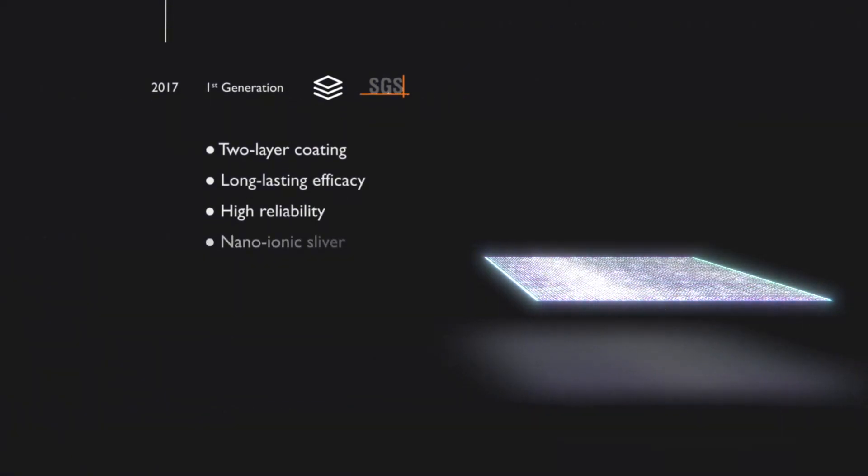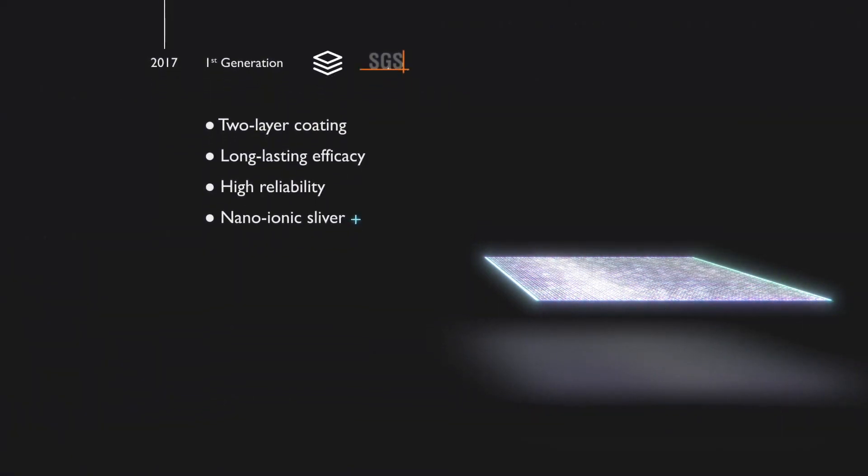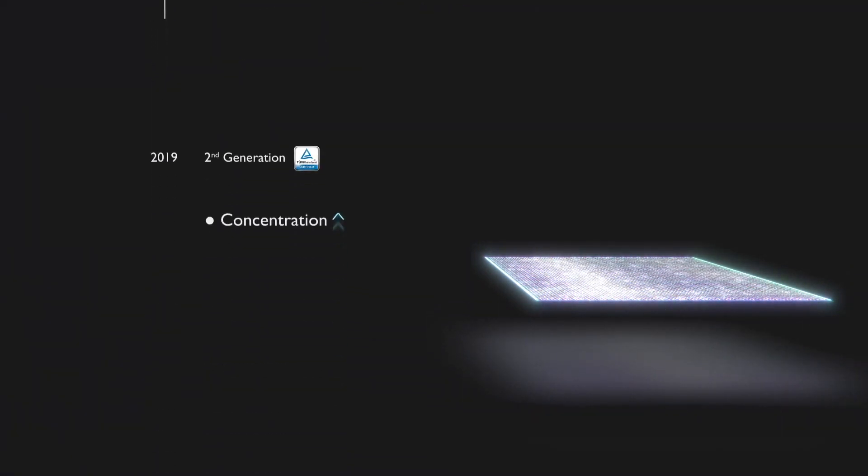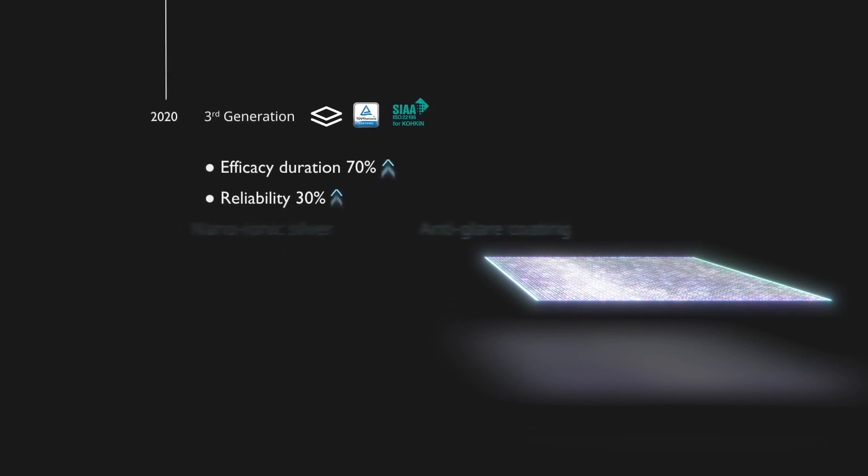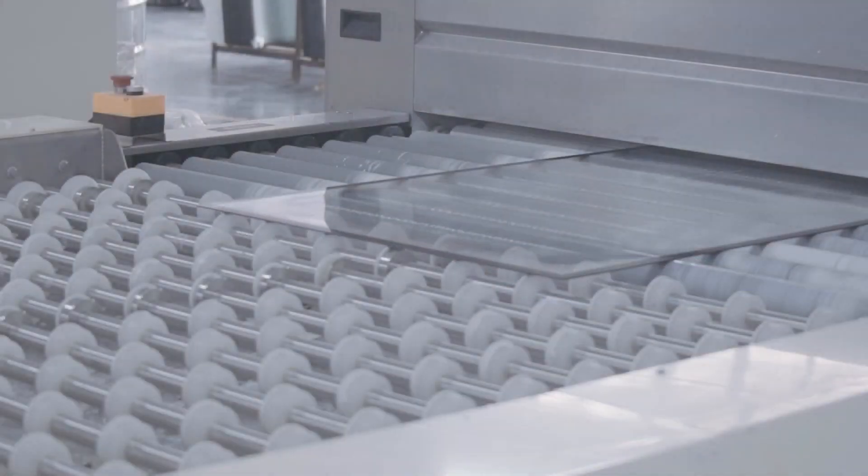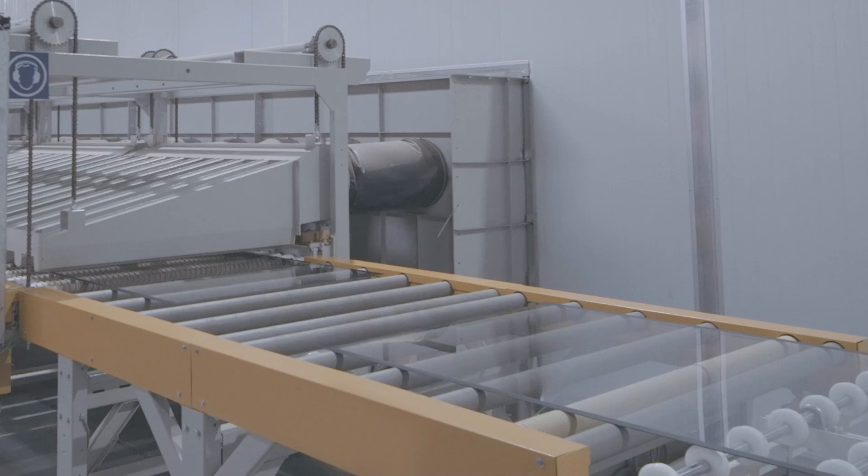Over the last five years, we've tirelessly continued perfecting our formula. From our first-generation screen that used a two-layer coating, we increased its concentration in the second generation. Our third and latest generation screen combines nano ionic silver with our anti-glare coating.